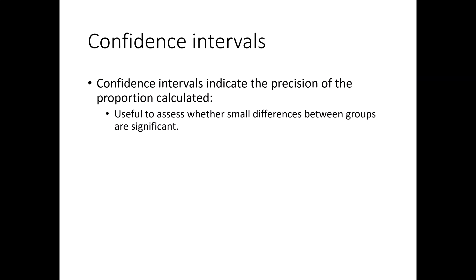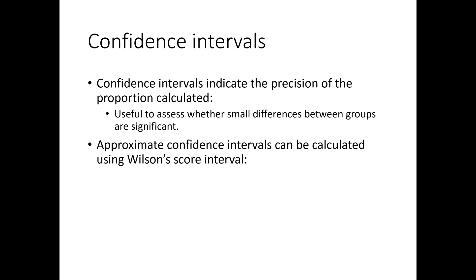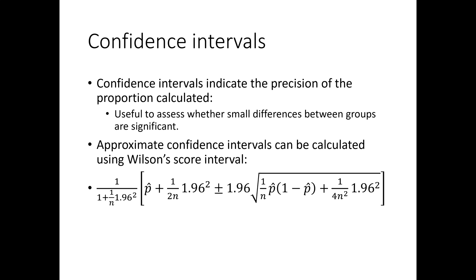Confidence intervals can be calculated for these proportions, and we can use them to assess whether differences between groups are statistically significant. There's a formula called the Wilson score interval that can be used to calculate these confidence intervals. It's a big, horrible formula, but it's built into WebMetric Analyst, so you don't need to calculate it yourself.